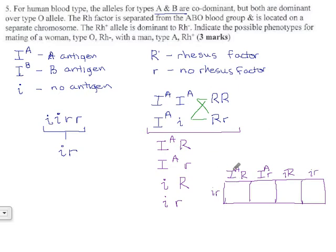Then the possible kids would be I^A little i, big R little r. Here we get I^A little i and little r little r. Little i little i, big R little r. I^A is dominant before recessive. And little i little i, little r little r. Those are all the possibilities.